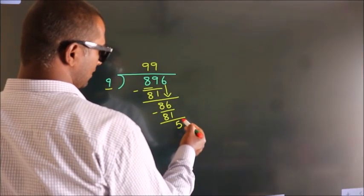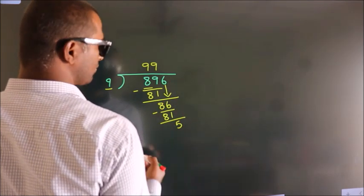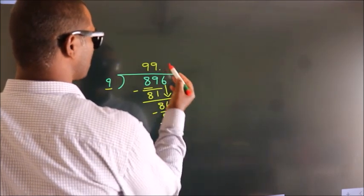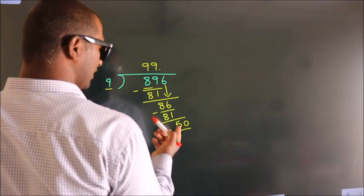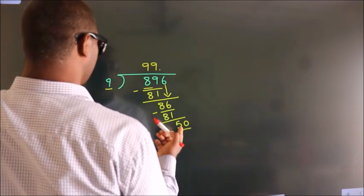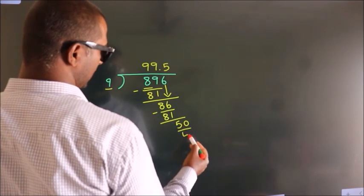After this, no more numbers to bring down. So what we do is put a dot and take 0. So 50. A number close to 50 in the 9 table is 9 fives, 45.